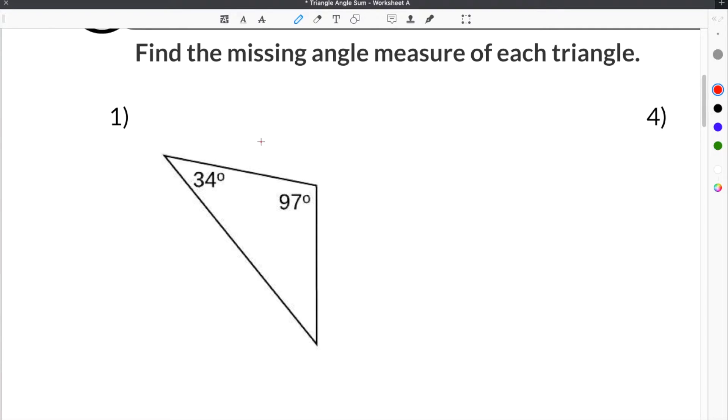The first thing we need to know about the Triangle Sum Theorem is the rule that all the angles in a triangle have to add up to 180 degrees. So, Angle 1 plus Angle 2 plus Angle 3 will always add up to 180 degrees.